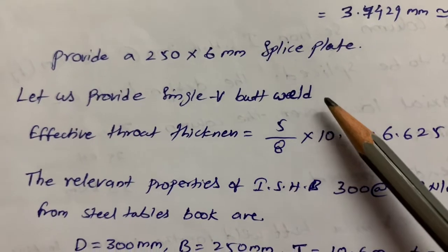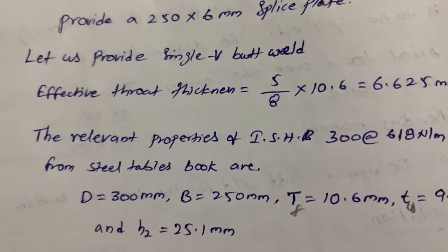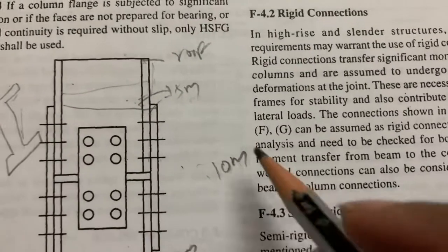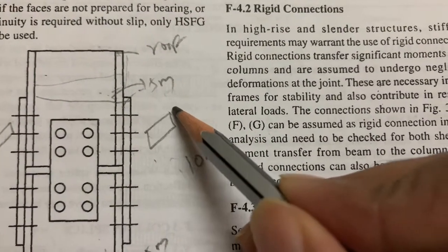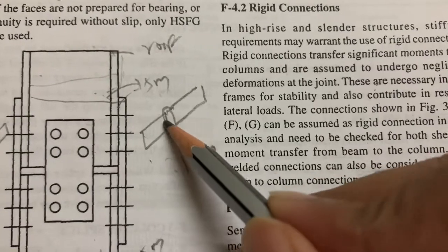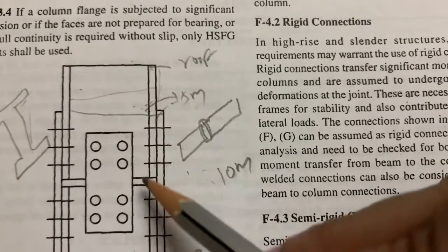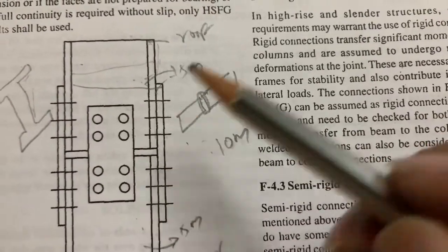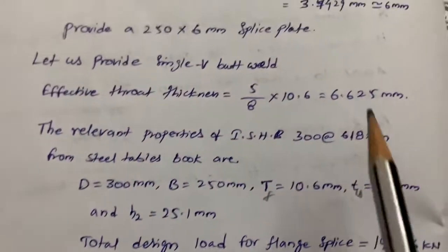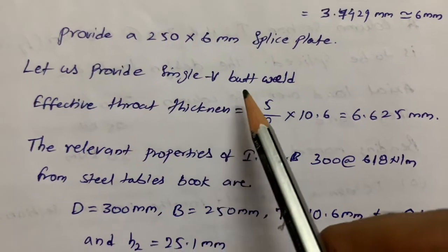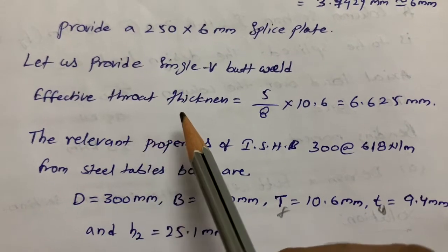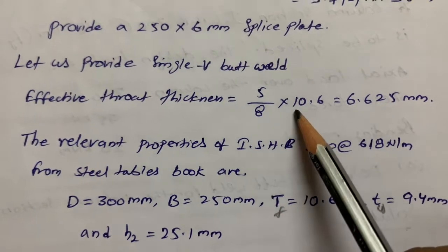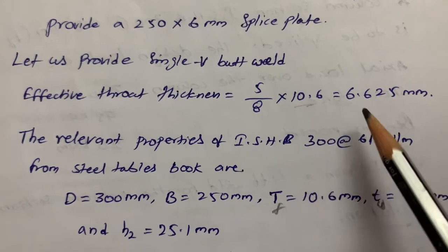To connect the splice plate, we use welding — specifically a butt joint, because the columns are placed side by side and welded at that interface. We provide a single-V butt weld. As per code, the throat thickness for butt weld is 5/8 times the flange thickness, giving a throat thickness of 6.625 mm from the steel tables.